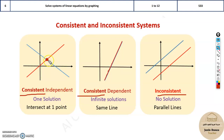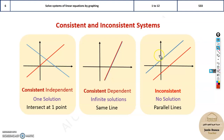When there is only one solution, these lines are independent — they do not need each other other than that one point, so they go their separate ways. Whereas when they are the same line, they are dependent on each other. So consistent and independent means one solution, intersecting at only one point. Consistent and dependent means infinite solutions because they are the same line. And lastly, inconsistent means parallel lines — they will never touch each other, so there is no solution.